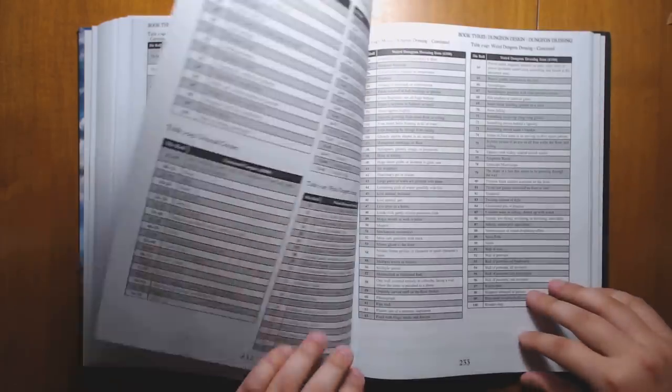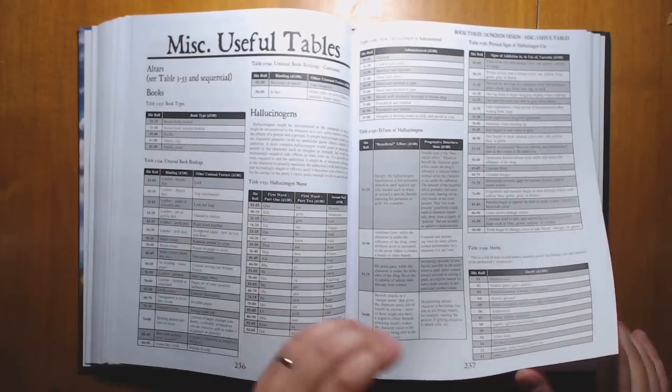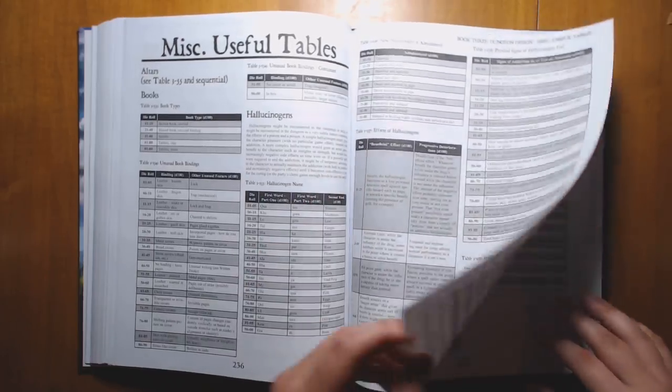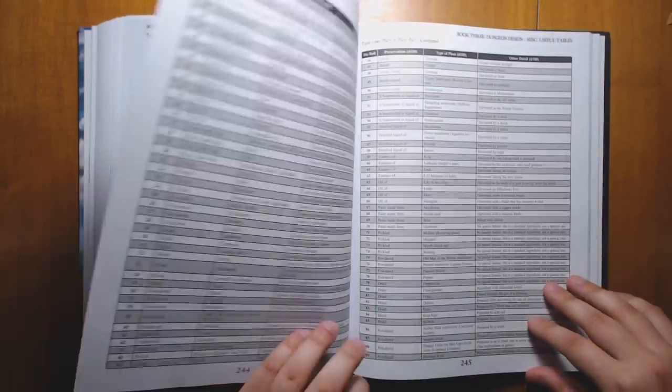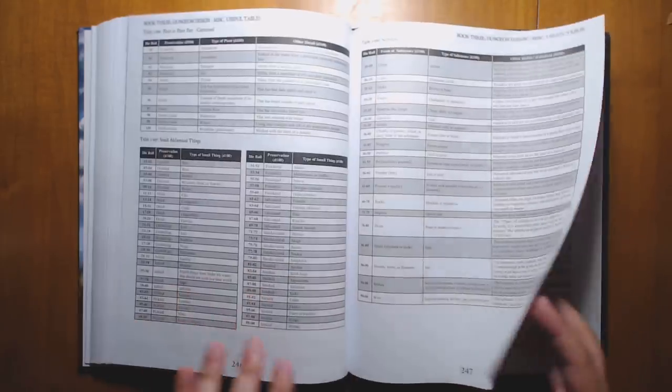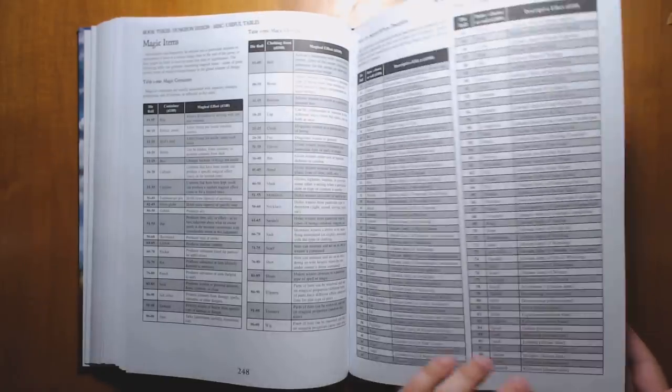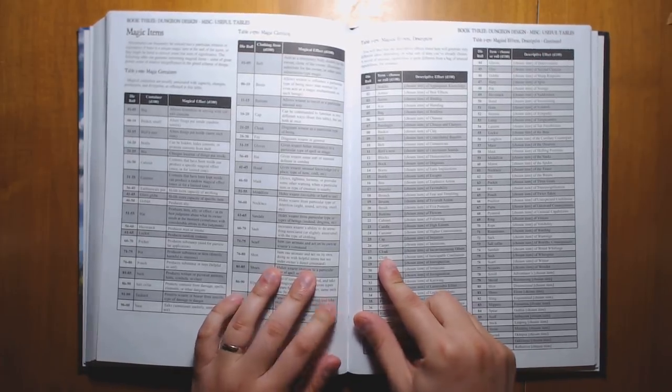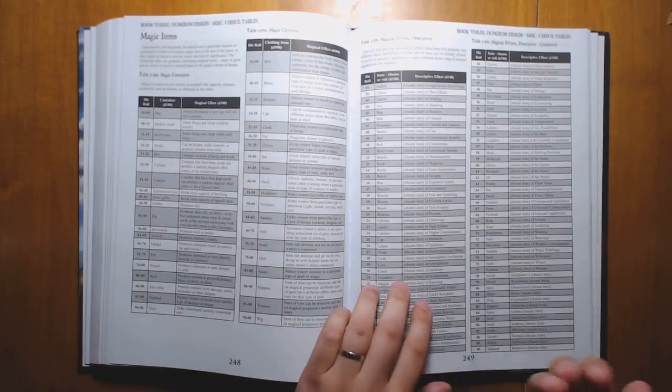Some dungeon dressing. So if you just want to add a little bit of weirdness and a bit of flavor in there, he has a bunch of tables for that. And some miscellaneous useful tables, including hallucinogens. That reminds me a lot of the Dolman Wood series that I've reviewed before. Animal and monster parts that you might want to have. Random magic items. This book does have, as you can see here, a sewn binding. Excellent. More books need the sewn binding.